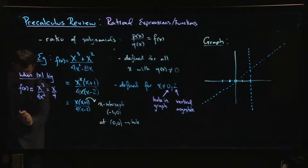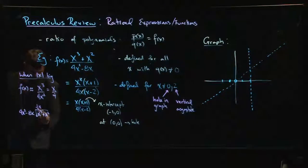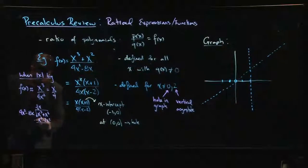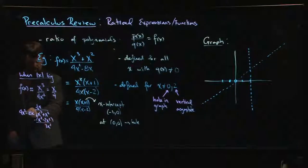If I wanted to really kind of nail this down what I would do is long division. I'd say okay let's take 4x squared minus 8x, let's divide it into x cubed plus x squared. I say okay so I need to first of all do one quarter x, that gives me x cubed minus 2x squared. Okay I subtract I get 3x squared.